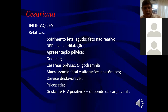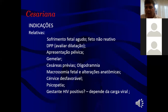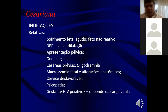Alterações anatômicas como tumor obstruindo a passagem do feto são indicação relativa dependendo do tipo. Colo desfavorável é relativo porque pode-se usar misoprostol para amadurecer o colo. Paciente doente mental é relativo: já fiz parto normal de paciente psicopata que colaborou bem, e já fiz cesariana com anestesia geral de outra que não deixava fazer raquianestesia. HIV positivo é relativo: depende do CD4 e da carga viral. CD4 acima de 500 com carga viral zerada pode ser parto normal; o ideal é agendar cesariana com 37-38 semanas com AZT venoso.